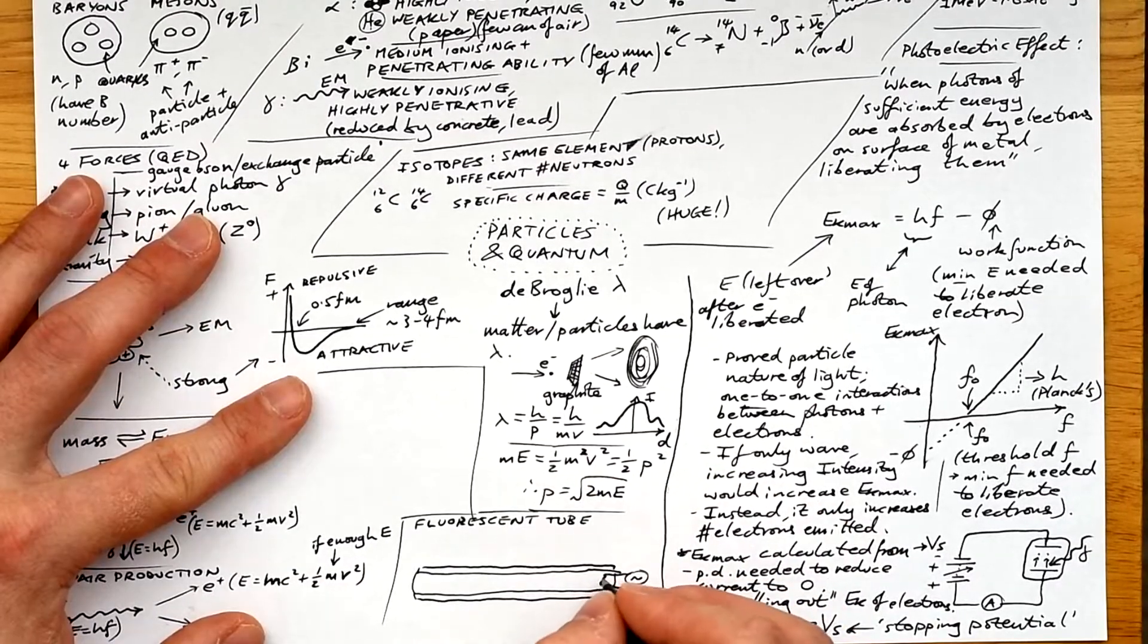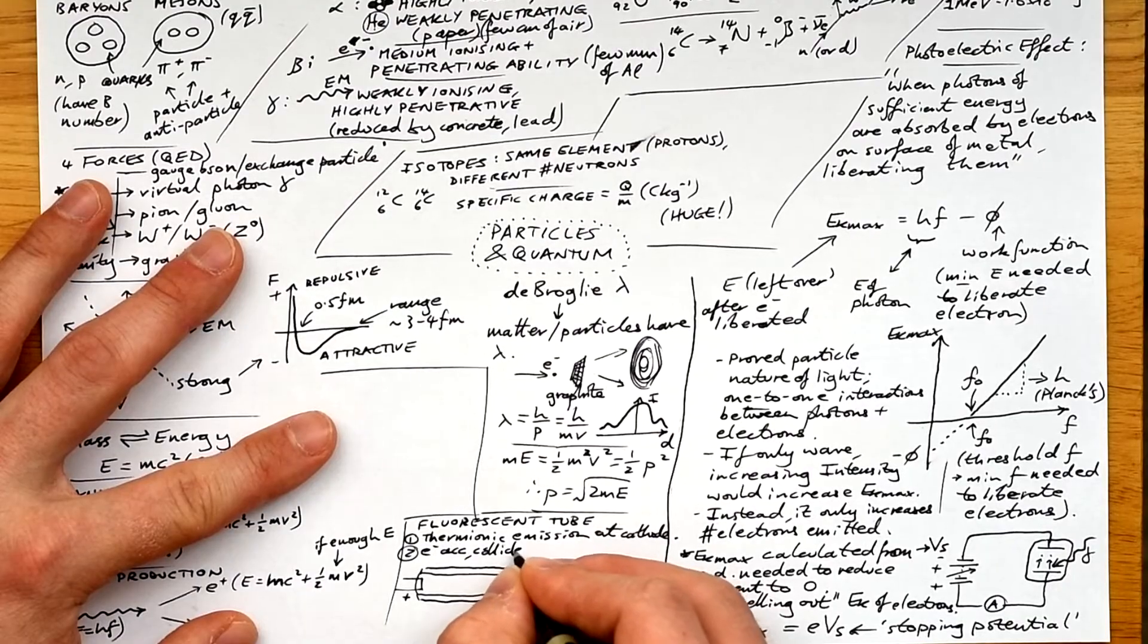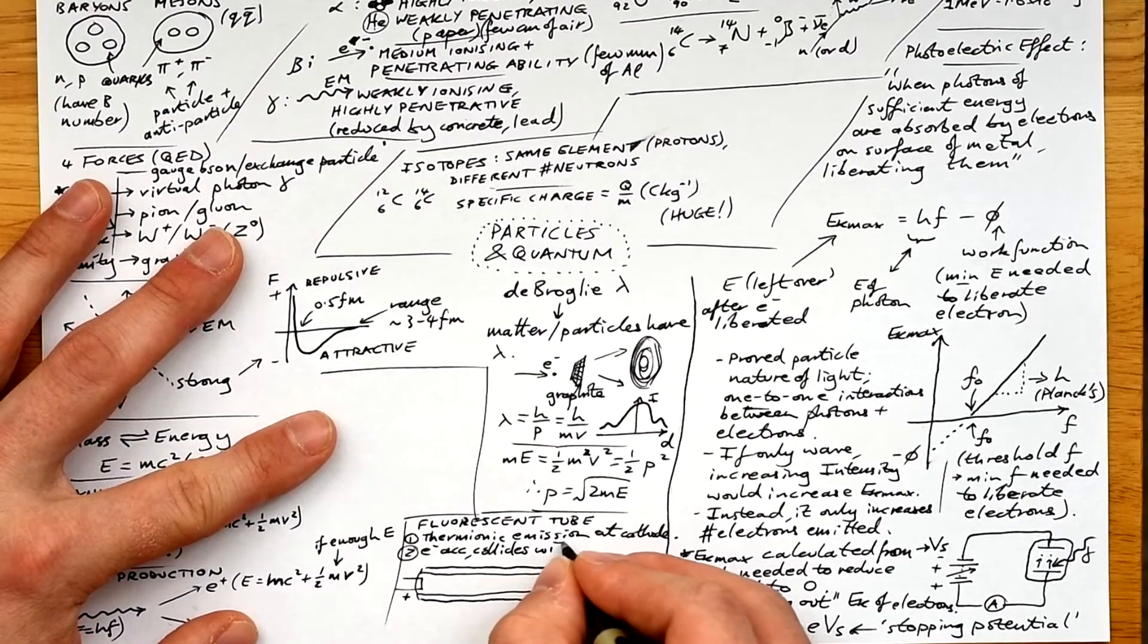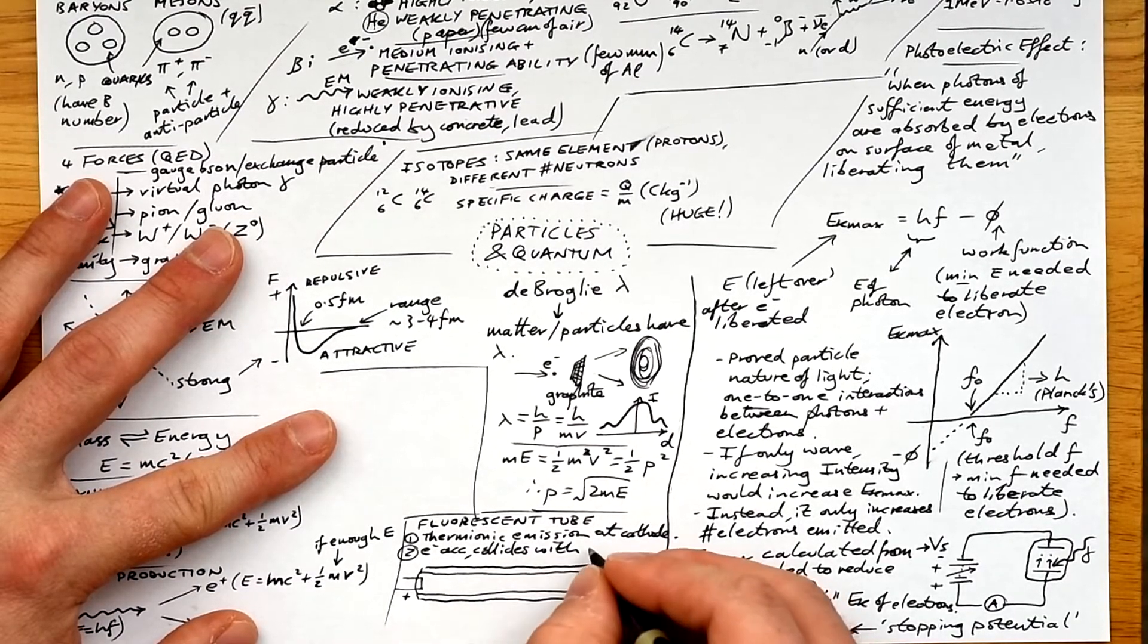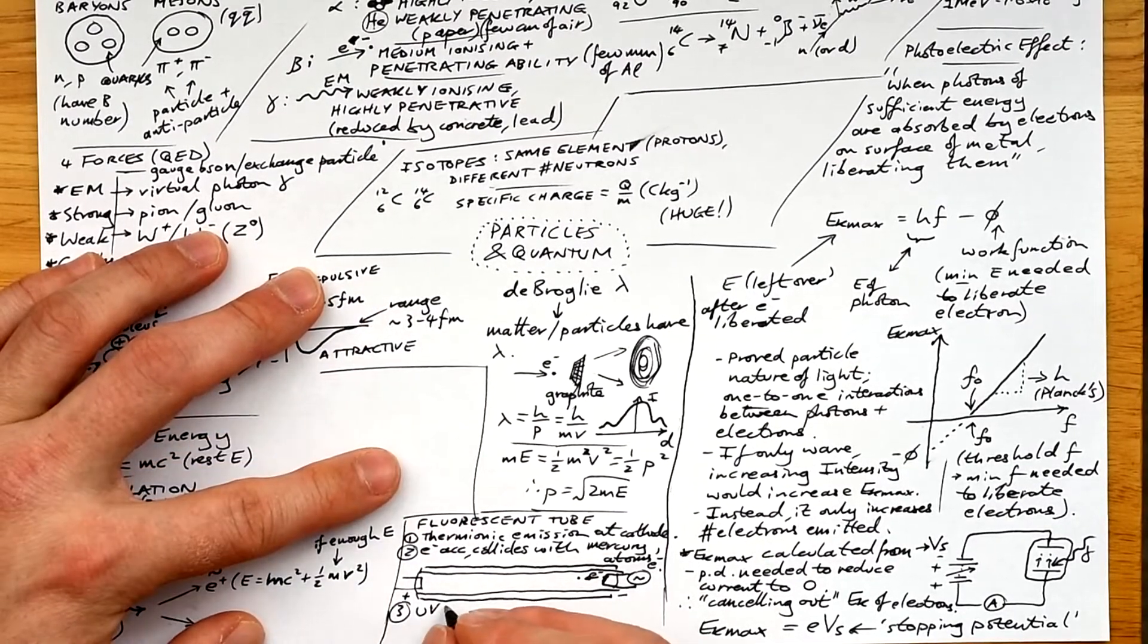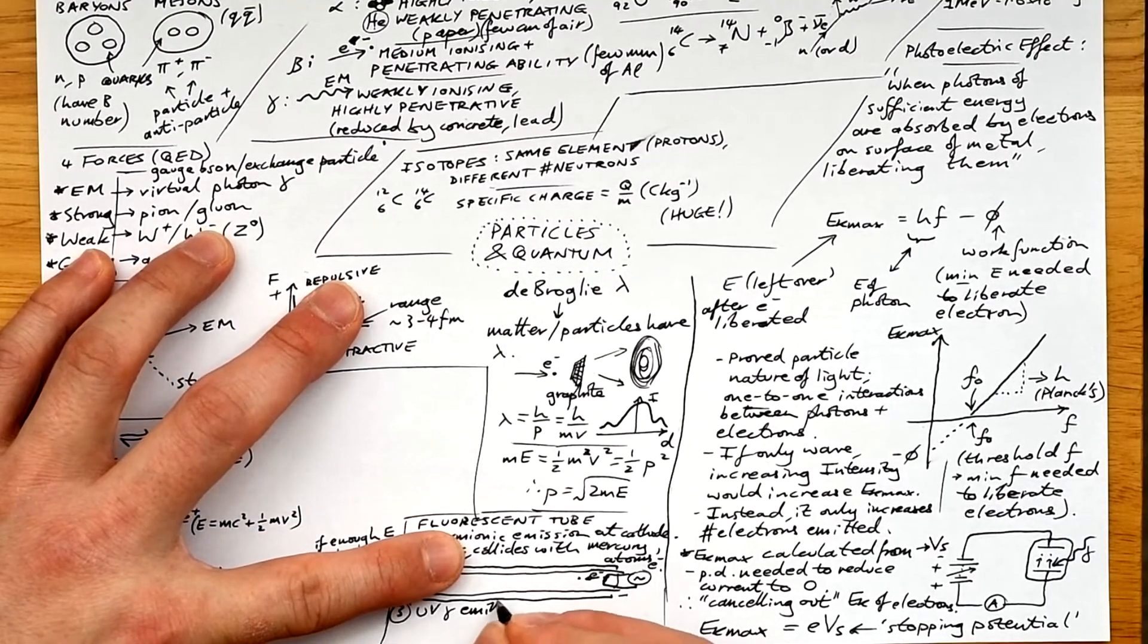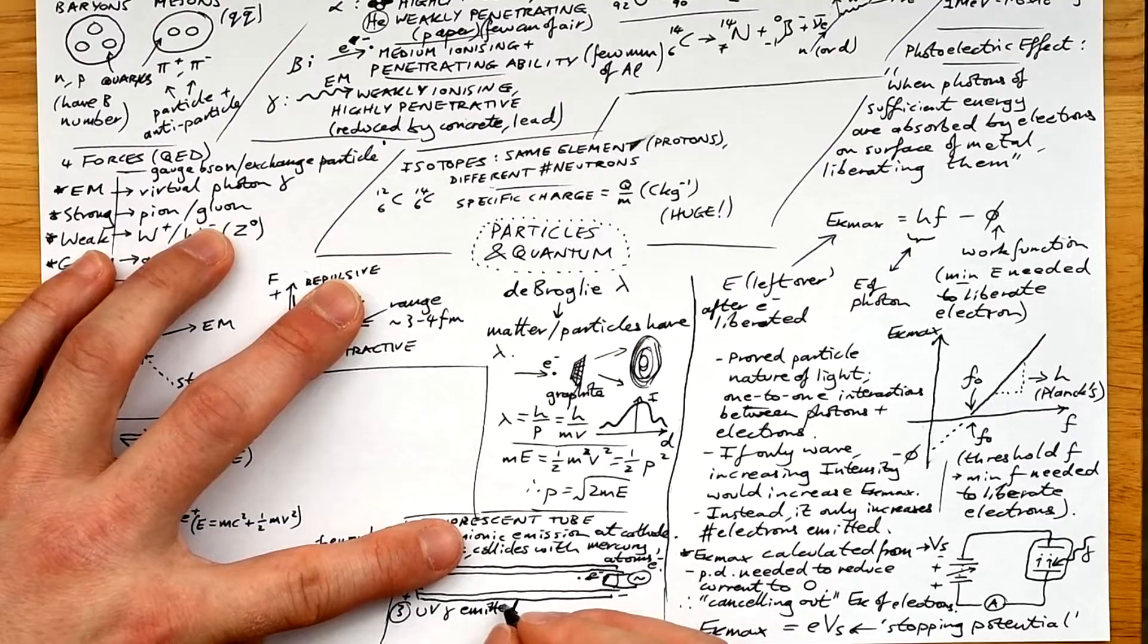Okay, fluorescent tube. What we have is a tube with a cathode on one end, and an anode on the other end. The cathode is heated with a current. Electrons are emitted by thermionic emission. They're attracted to the anode on the other side, and they bash into low pressure mercury gas atoms on the way, raising their electrons to higher energy levels.